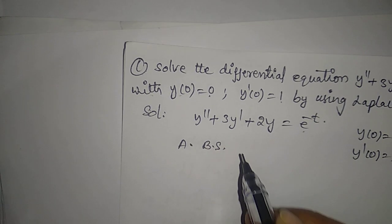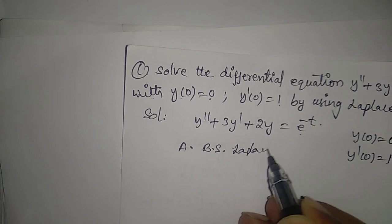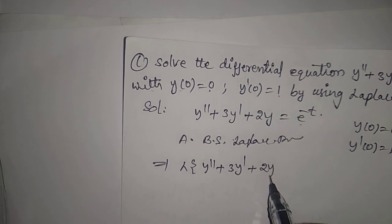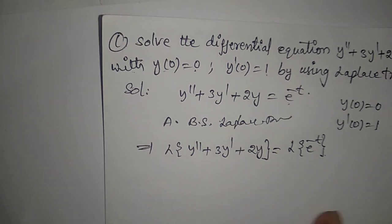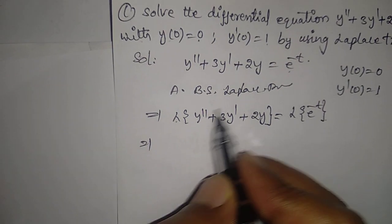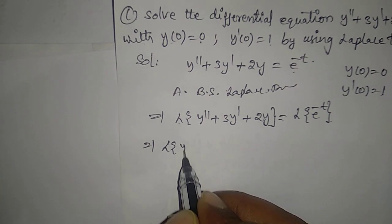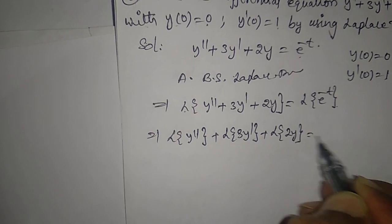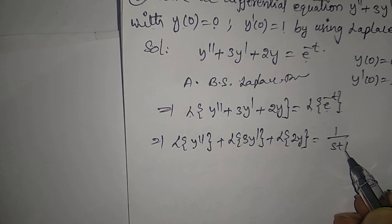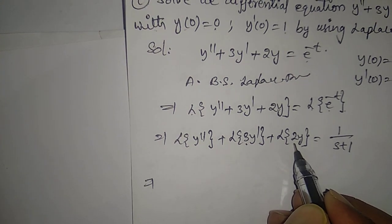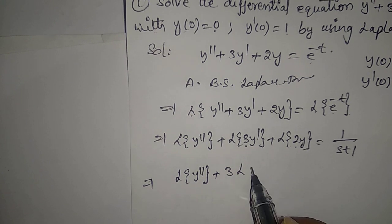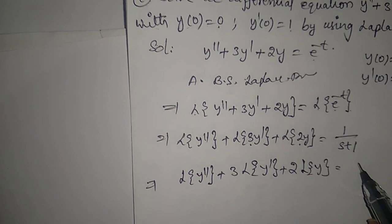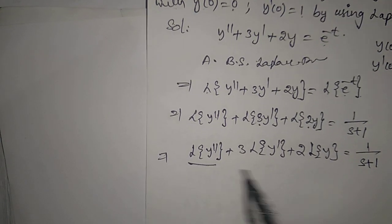Apply Laplace transform to both sides: L{y'' + 3y' + 2y} = L{e^(-t)}. Split the terms: L{y''} + 3·L{y'} + 2·L{y} = 1/(s+1), since 3 and 2 are constants and can be taken outside.